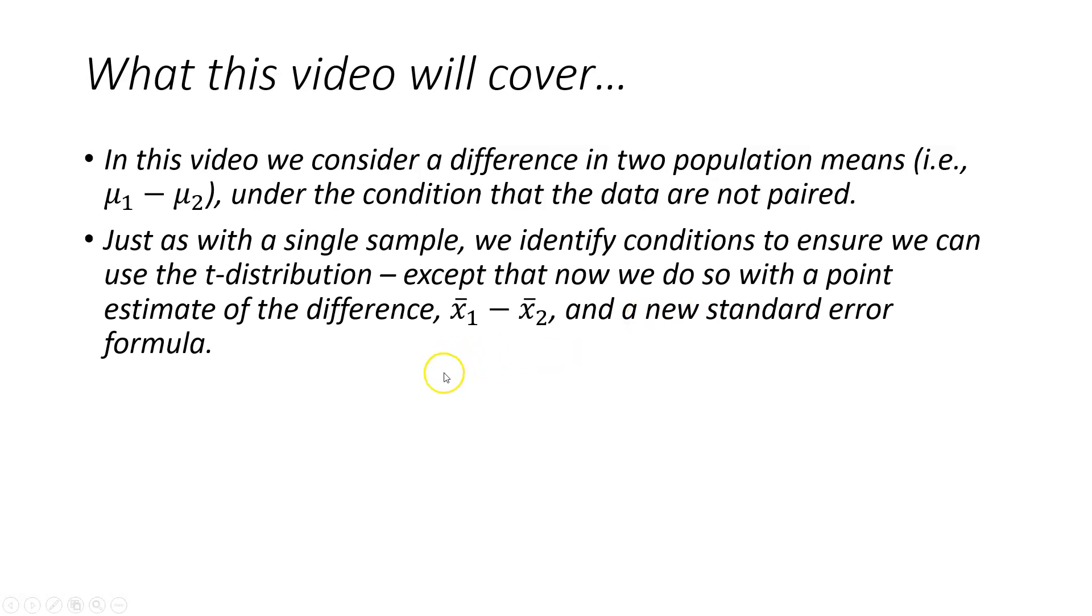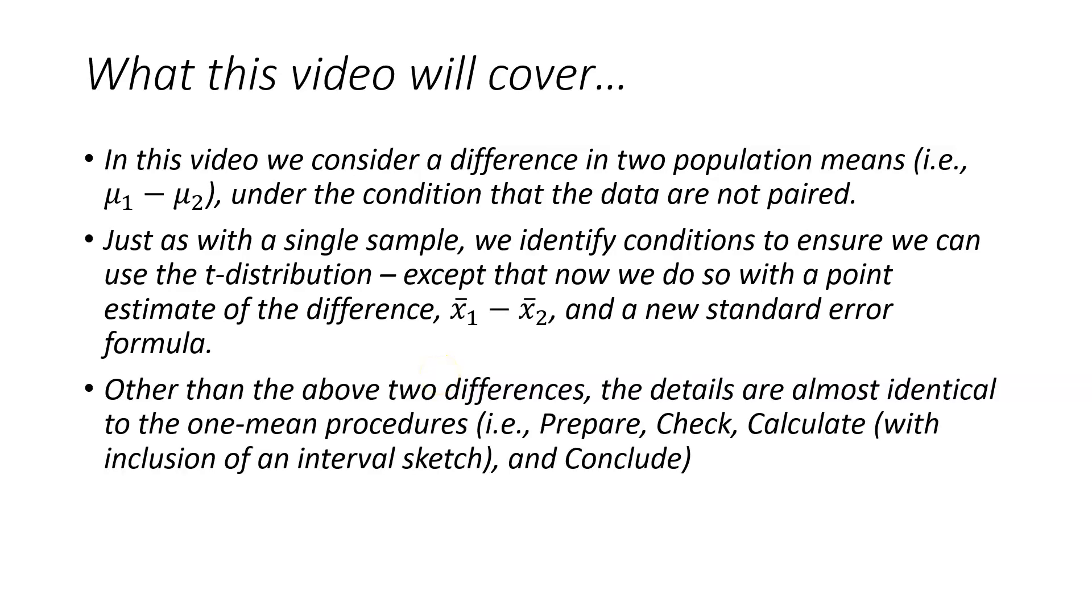Just as with a single sample, we identify conditions to ensure we can use the t-distribution, except now we do so with a point estimate of the difference between two sample means and a new standard error formula. Other than the above two differences, the details are almost identical to the one mean procedures, that is, the four-step process that we have been using since chapter 5.